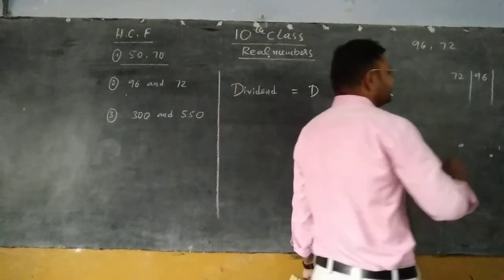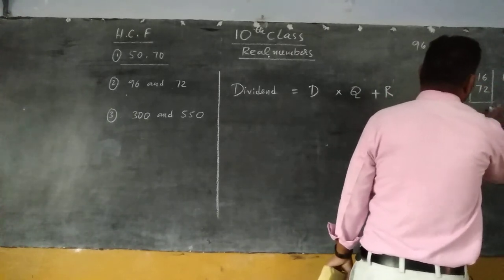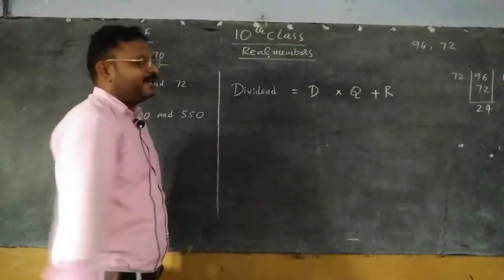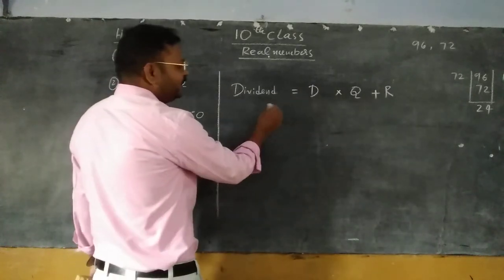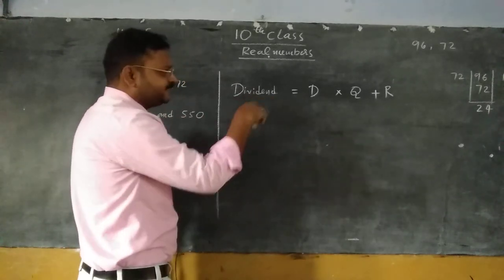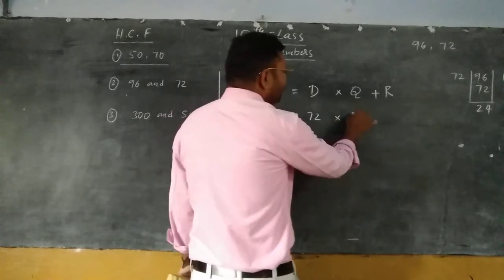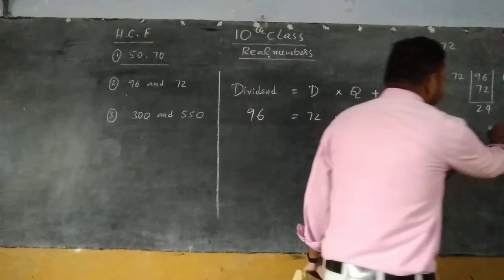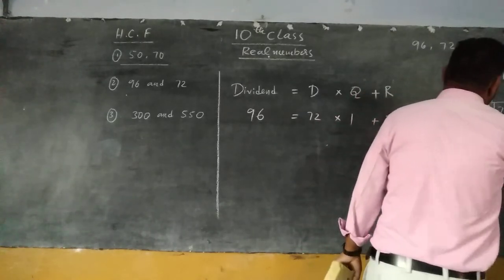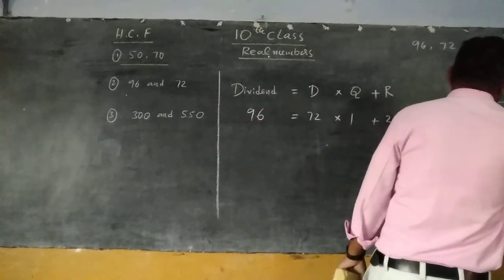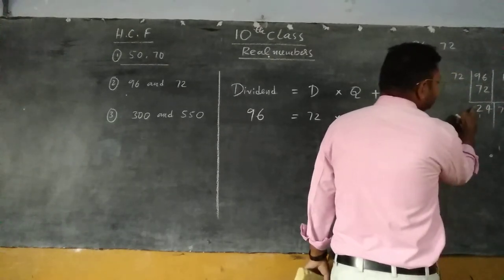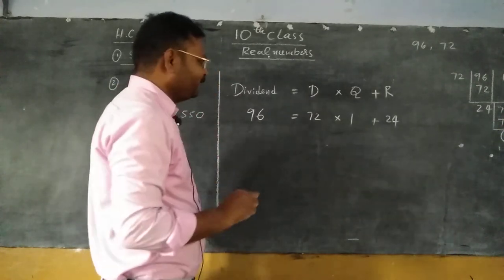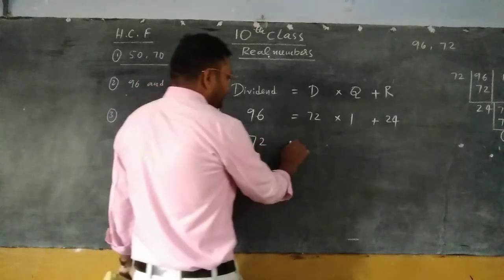I think it will divide with only ones — 72 ones of 72. Do the subtraction: 6 minus 2 is 4, 9 minus 7 is 2. So here we do not get 0; the remainder is not equal to 0. So apply Euclid's division process: dividend is 96, divisor is 72, quotient is 1, remainder is 24. Again do the division till we get the remainder as 0.